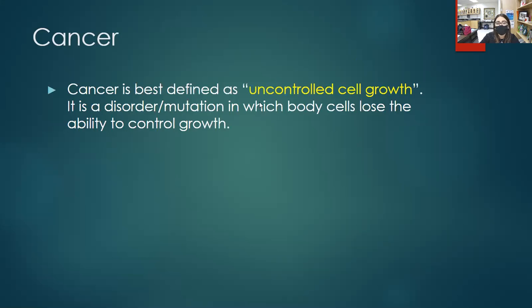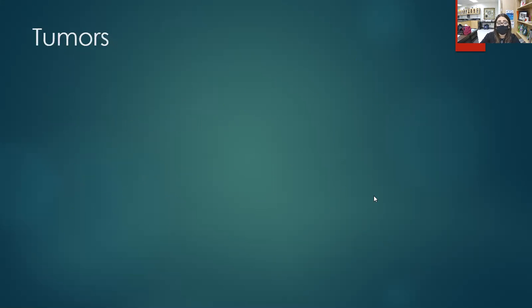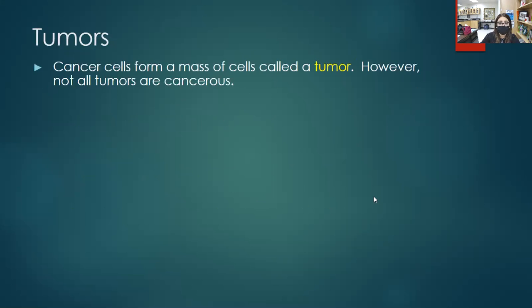Cancer is defined as uncontrolled cell growth. There is no longer a stop — we are just going full steam ahead, making cells that are no longer needed. These cells begin to accumulate in clusters that we refer to as tumors.